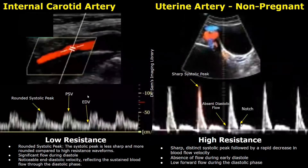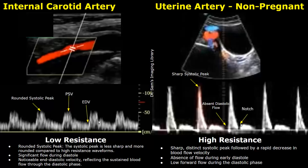This is a waveform in the internal carotid artery as it goes to the brain — it has a low resistance waveform. We can see the rounded systolic peak, there is significant forward flow during diastole, there is no flow reversal, and there is a significant end diastolic velocity of almost 25 centimeters per second. So this is a low resistance waveform.